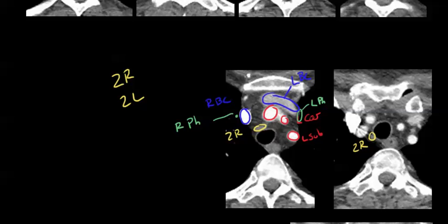Your vagus is going to be coming down along in this area here — left vagus. And your left recurrent laryngeal is going to be going in this esophagotracheal groove. You've got your esophagus back here, and of course your trachea in the middle.